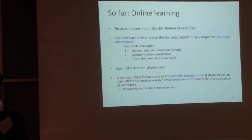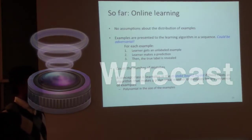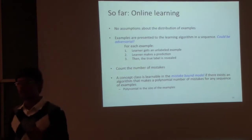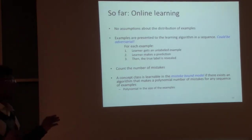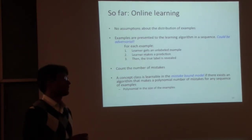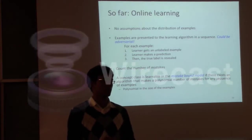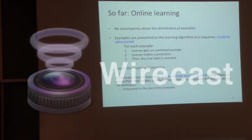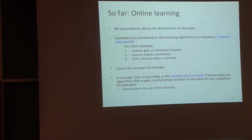We call a concept class learnable under the mistake-bound model if, for any sequence of examples, it makes no more than a polynomial number of mistakes — polynomial in the size of the input, meaning the dimensionality or number of features. Even though we are only looking at one example at a time, we want in the long run the number of mistakes to be bounded. That is a property of the concept class — the number of functions, which is inherently a function of the dimensionality.